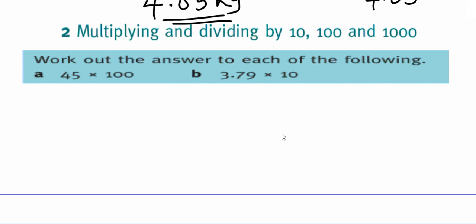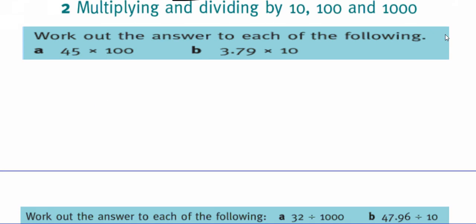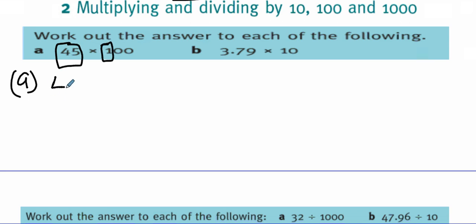Now let us see another concept: multiplying and dividing by 10. Let us start with part A — work out the answer to each of the following. You have 45 times 100. What you do is ignore the zeros, then do 45 times 1 — the answer is 45. Then put the two zeros next to it. This is the answer, 4500.